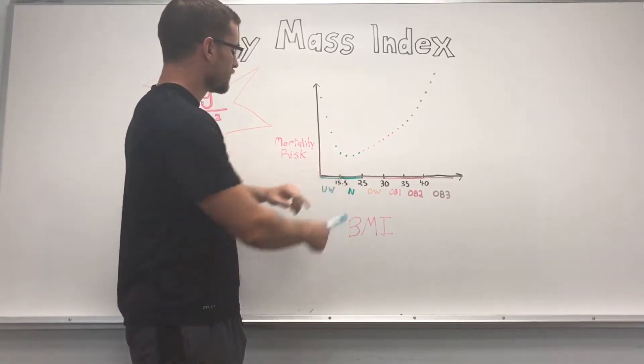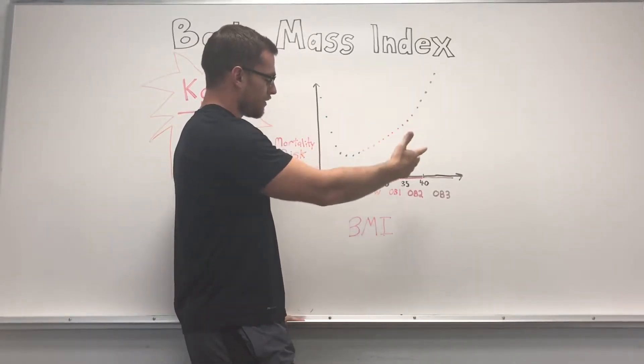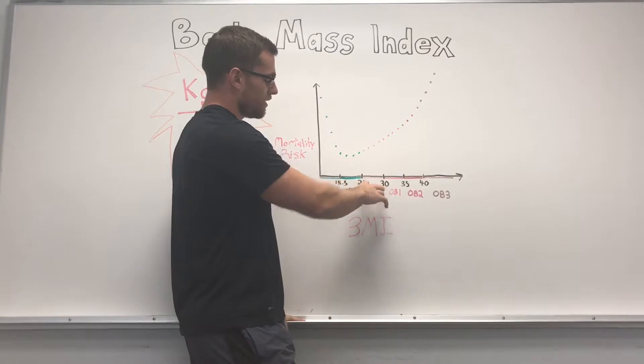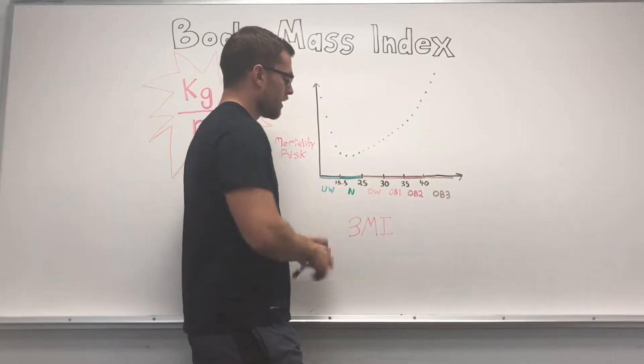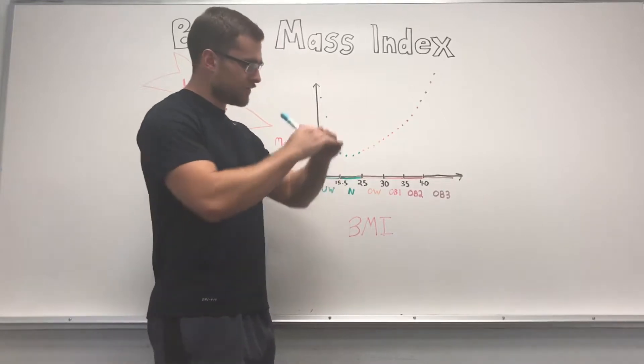As your BMI increases to 25 to 30 you're considered overweight. From 30 to 35 you're considered obese, and there are three tiers of obesity.